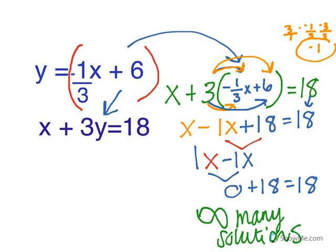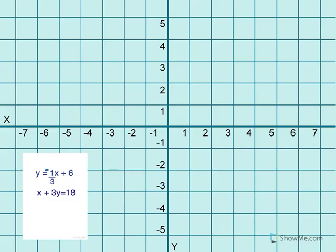Another way to solve this is to solve by graphing. To graph these two, you would have to subtract the x to get it in y equals mx plus b form, or slope-intercept form.